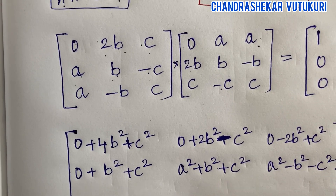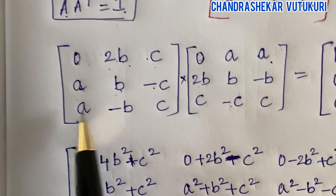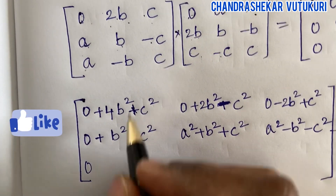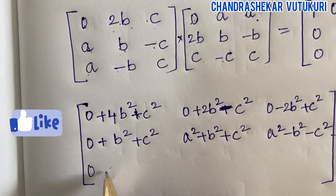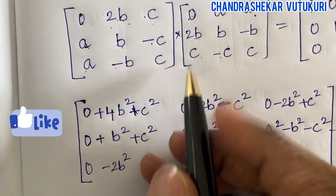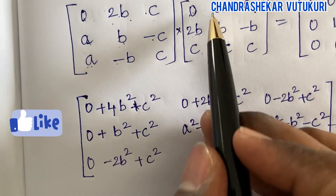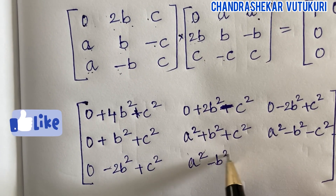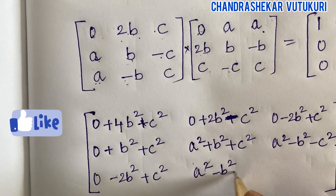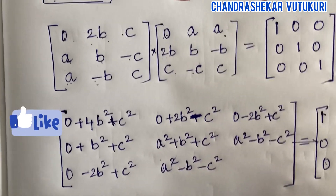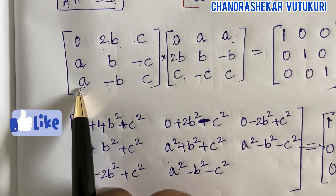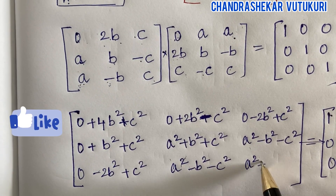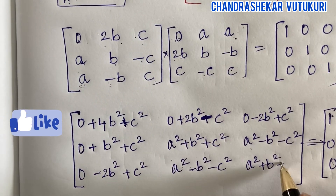For the third row multiplied by all columns: a times zero is zero, minus b times 2b is minus 2b squared, and c times c is plus c squared. For the next: a times a is a squared, minus b squared, minus c squared. Finally the last element: a times a is a squared, minus b times minus b gives plus b squared, and plus c squared.